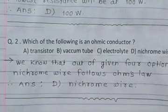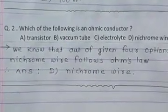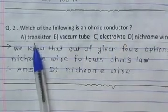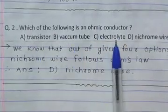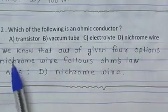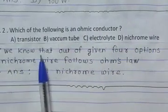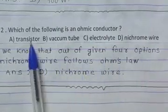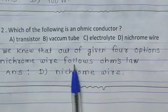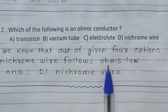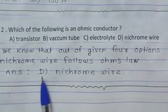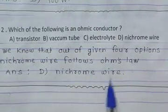Question number 2: Which of the following is an ohmic conductor? Options are transistor, vacuum tube, electrolyte, or nichrome wire. We know that out of these 4 options, only nichrome wire follows Ohm's law. So the answer is D, nichrome wire.